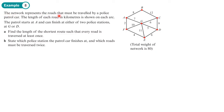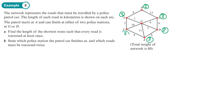The network represents the roads that must be travelled by a police patrol car. The length of each road in kilometres is shown on each arc. The patrol starts at A and can finish at either of two police stations, G or D. Find the length of the shortest route where every road is traversed at least once. The first thing we need to do is write down the valency of each of these vertices. I can see lots of odd ones, and the one in the middle has a valency of 5.